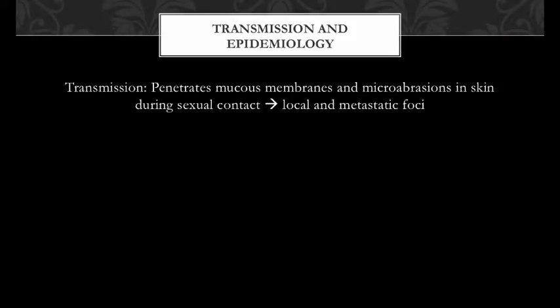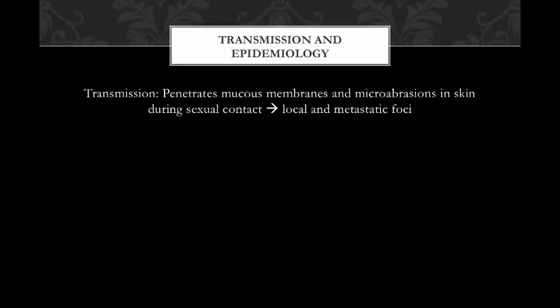Syphilis is transmitted by penetrating the mucous membranes and micro-abrasions in the skin during sexual contact. Once it has penetrated these barriers, it spreads via blood vessels and lymphatics, creating local and metastatic foci of infection. It is highly infectious — the 50% inoculation dose is just 57 organisms. That means if you inoculated 10 individuals with 57 Treponema organisms, 5 would become symptomatic with syphilis.